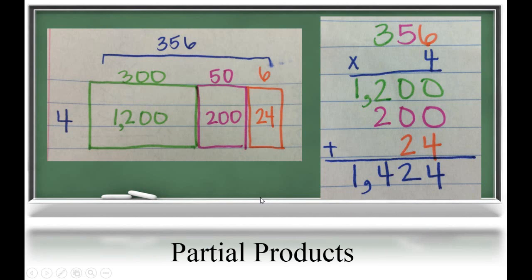The next strategy students will learn is called partial product. This strategy is very similar to distributive property, it's just not recorded using the same parentheses. You can see we have 4 times 300 is 1,200. Now, this is starting to look very similar to that traditional algorithm, so it's important for students to start lining up their place values and recording their digits in the correct position. 4 times 5 tens is 20 tens or 200. 4 times 6 ones is 24 ones. Add all of that up and you get 1,424.